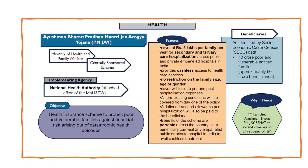Let's understand these points with an example of the Ayushman Bharat scheme, which has been repeatedly asked in the prelims examination. Since health is a concurrent subject, both states and center provide funds, making it a centrally sponsored scheme. The Ministry of Health and Family Welfare oversees its implementation, and the National Health Authority (NHA) implements it on the ground. The objective is to provide health insurance to poor households. This is how you can make your own notes regarding schemes. A schemes PDF will also be attached in the description box for reference.